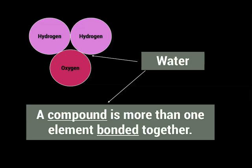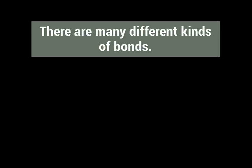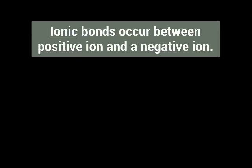A compound is more than one element bonded together. The element is the individual atom — so we have hydrogen and oxygen; each of those individual atoms, the name of those atoms is the element. And when they are bonded together, they become a compound.